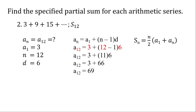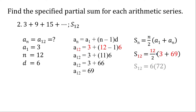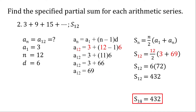Now we have our first term and our last term. We substitute all the givens: n is 12 because we need the sum of the first 12 terms, a sub 1 is 3, and a sub n is 69. 3 plus 69 is 72, 12 divided by 2 is 6, and 6 times 72 is 432. That's the sum of the first 12 terms.